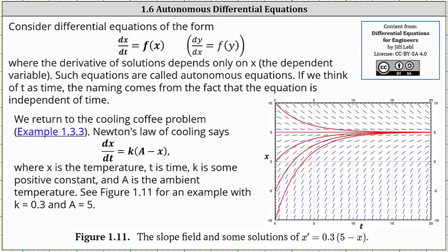Welcome to a lesson on autonomous differential equations. Consider differential equations of the form dx/dt equals f of x, where the derivative of solutions depends only on x, the dependent variable. Such equations are called autonomous equations. If we think of t as time, the naming comes from the fact that the equation is independent of time. We can also express autonomous differential equations in the form dy/dx equals f of y.